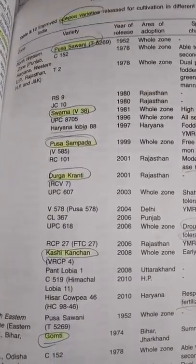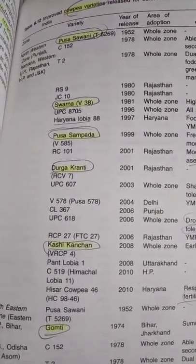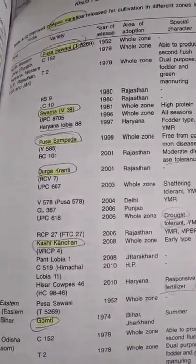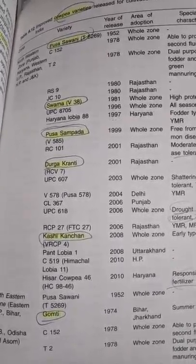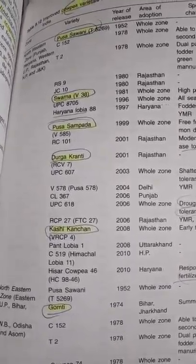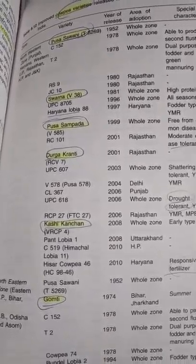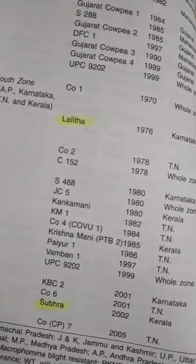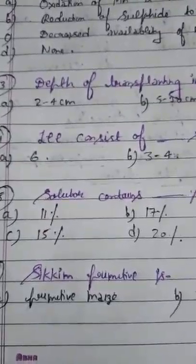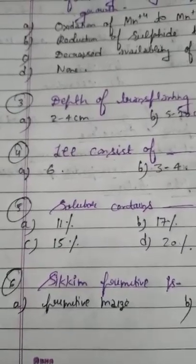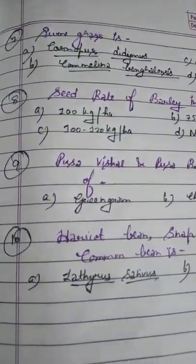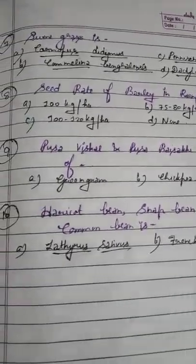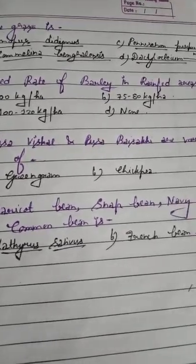Question 6: Sikkim primitive is — Option A: primitive maize, Option B: cowpea. Some important varieties of cowpea to remember: Pusa Savani, Swarna, Pusa Sampada, Durga Kranti, Kashi Kanchan, Gomti, Lalita, and Shubra. Sikkim primitive is primitive maize. Please remember it.